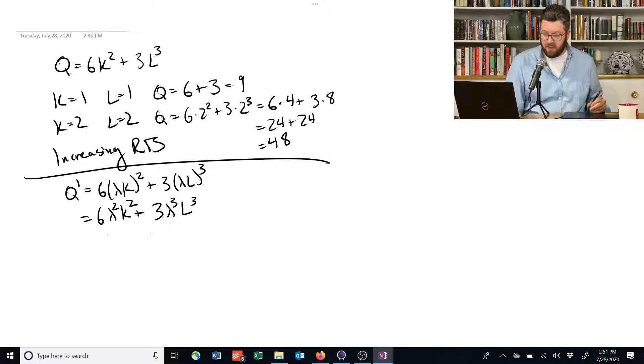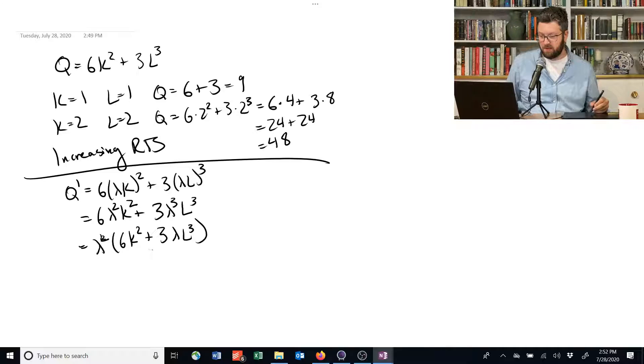We can't totally factor it out, but we can say this is equal to lambda squared times 6k squared plus 3 lambda l cubed. And this thing here is going to be already greater than q because it's equal to q, except we've now multiplied part of it by this lambda, where we're assuming lambda is greater than 1. So we're scaling things up. So if we're adding a little bit more to that piece, then this thing is going to be greater than q.